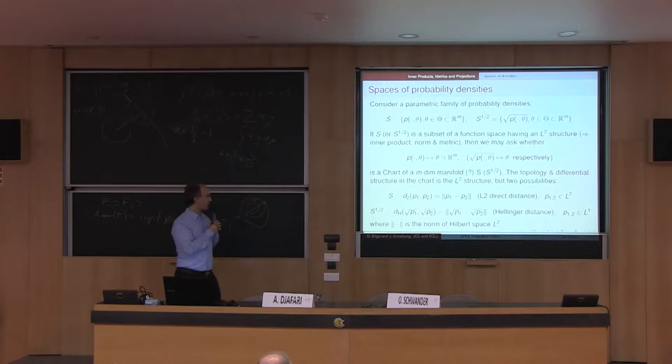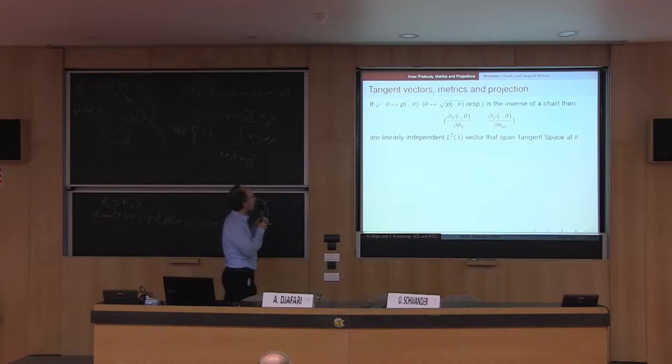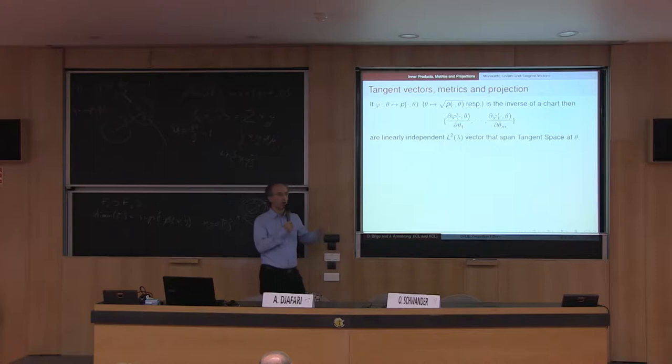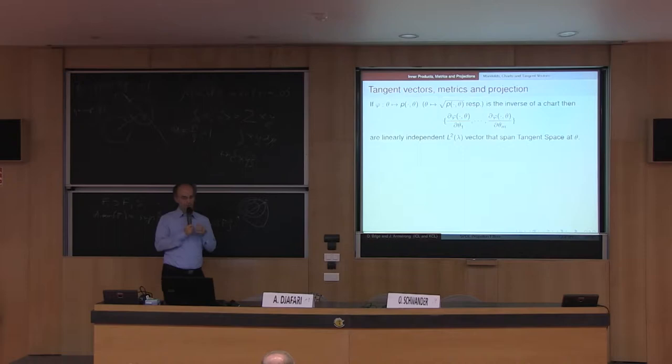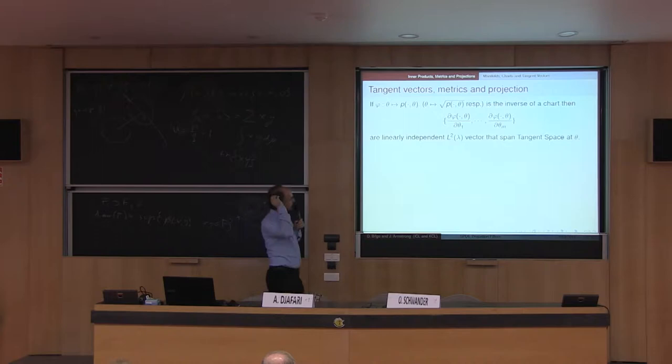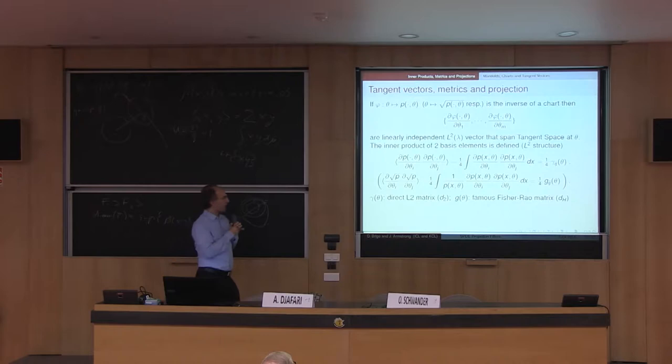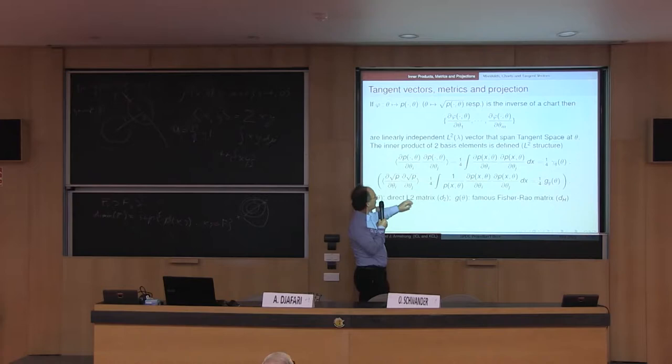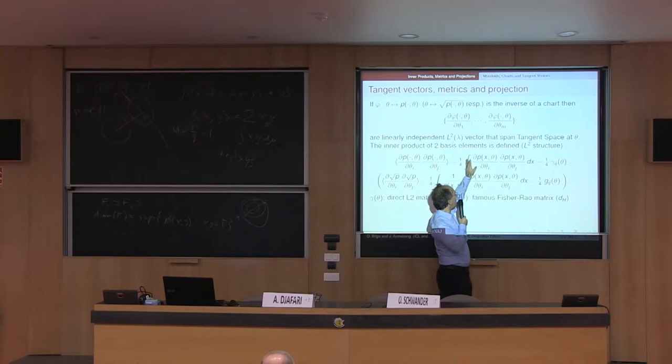If you call phi the inverse of the chart, depending on which chart you take — whether with the square root or not — the scores, the partial derivatives with respect to the coordinates, form the so-called tangent space to the finite dimensional manifold of densities you have chosen. These vectors are linearly independent and span the tangent space of the family. When you take the inner product of any two tangent vectors, if you choose the densities without square root, you get the integral of the product of the partial derivatives, which is a metric I call gamma.